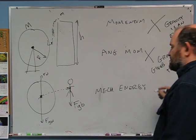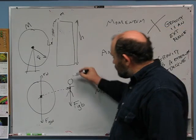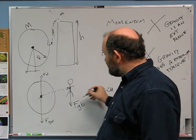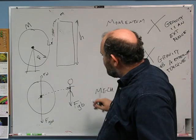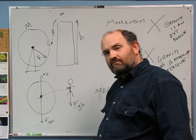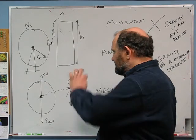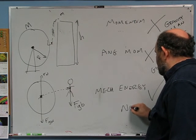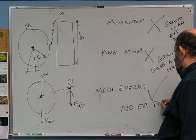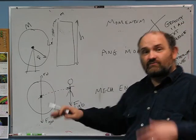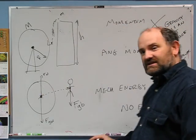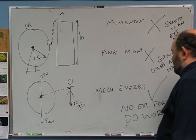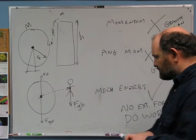What about mechanical energy? Do any external forces do work? Gravity on Bond is doing work, but we are tracking gravity with potential energy, so that's handled. The normal force on the Ferris wheel is an external force, but it does not do work because the center of the Ferris wheel doesn't move. So mechanical energy is conserved while he's falling — we can use that.